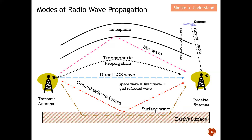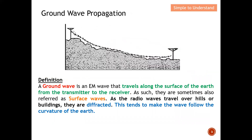This diagram shows ground wave propagation. A ground wave is an electromagnetic wave that travels along the surface of the earth from the transmitter to the receiver, propagating on the earth's surface. This is why they are sometimes also known as surface waves.